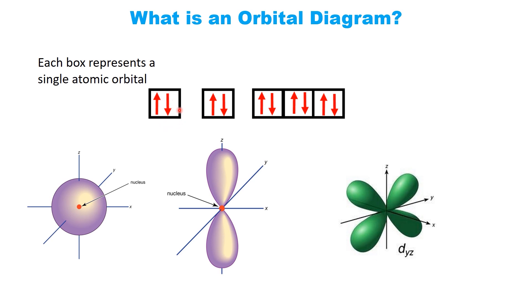Within each box, electrons are shown as arrows. An upward arrow represents an electron with spin-up, while a downward arrow represents an electron with spin-down. Each orbital can hold a maximum of two electrons, but they must have opposite spins. That's why, in orbital diagrams, you'll typically see no more than two arrows in each box.